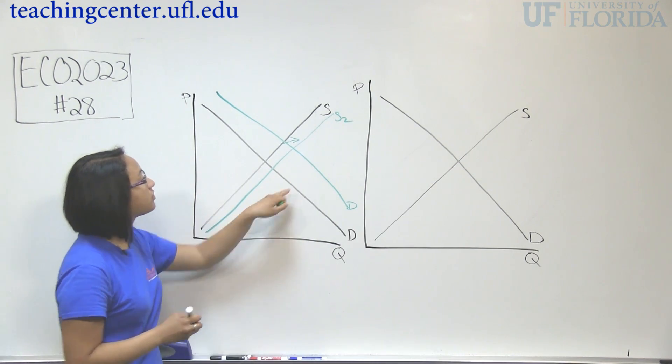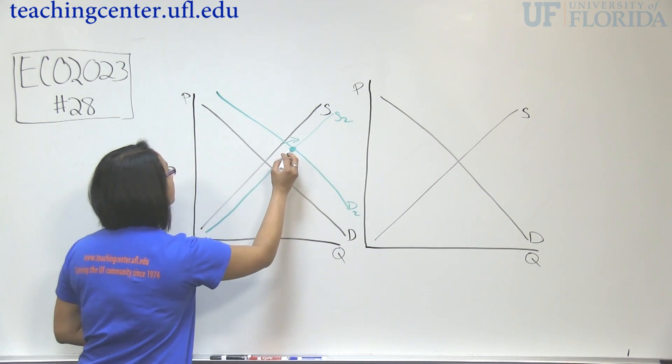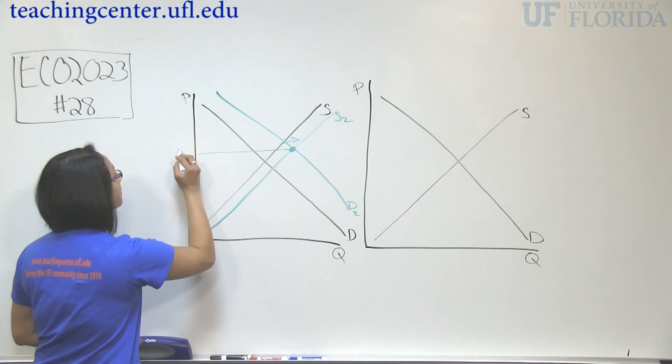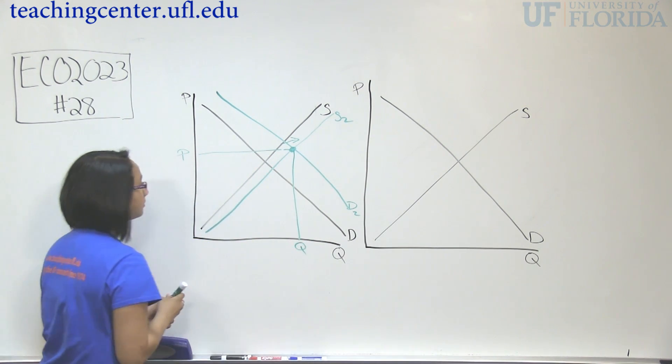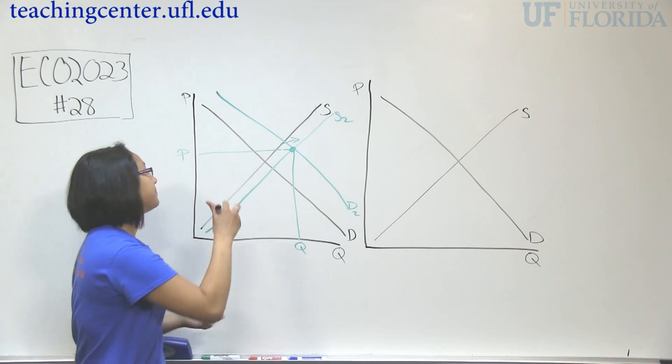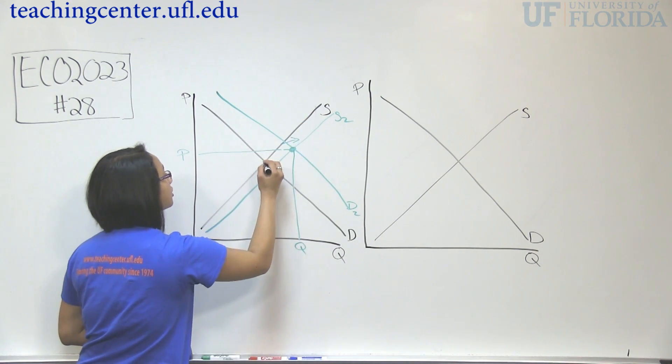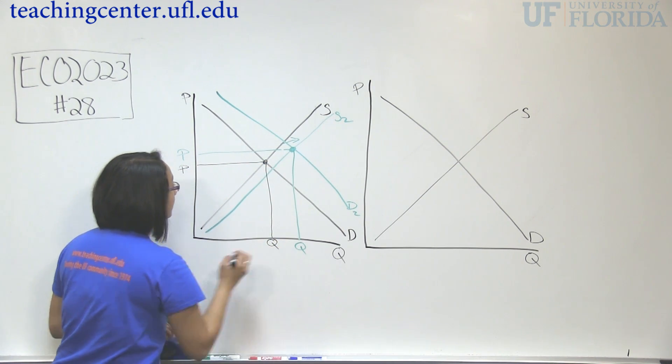And where those new curves intersect is our new point. So let's see where price is. Here's our price. Here's our quantity. Comparing that with our old equilibrium, here's our original price and here's our original quantity.